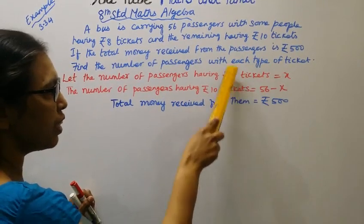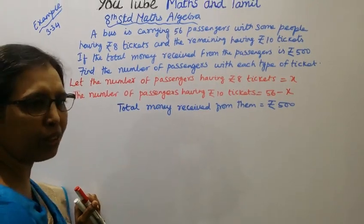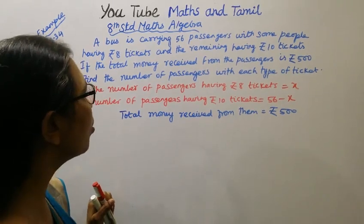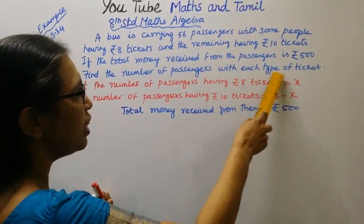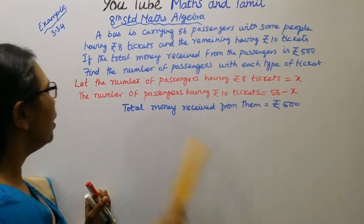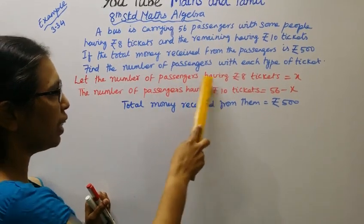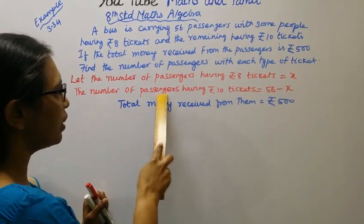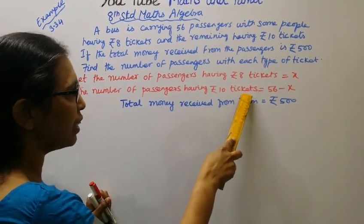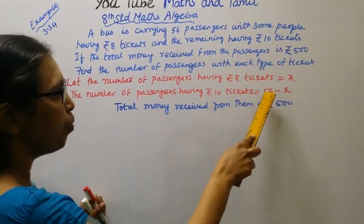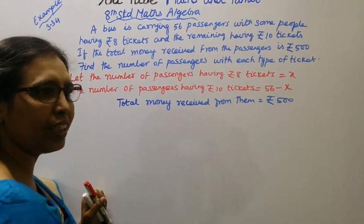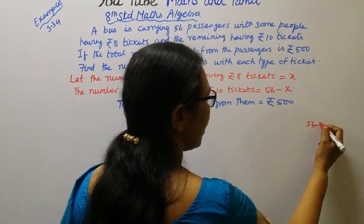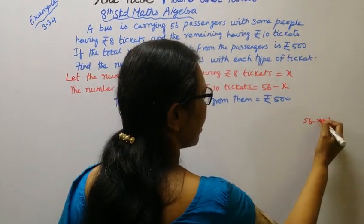Let the number of passengers having Rs. 8 tickets be x. Then the number of passengers having Rs. 10 tickets is 56 minus x. We need to find the number of passengers with each type of ticket.